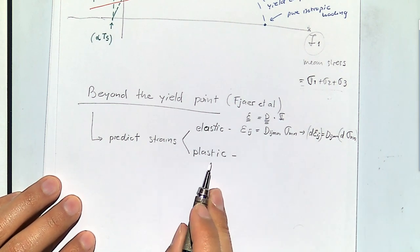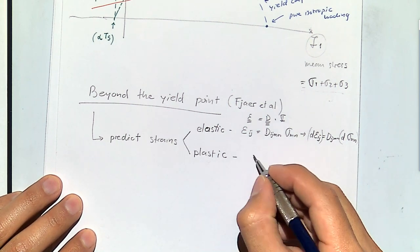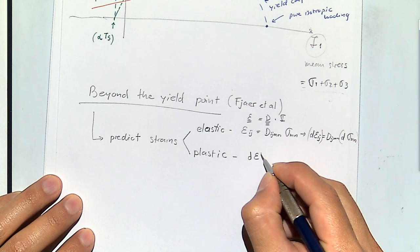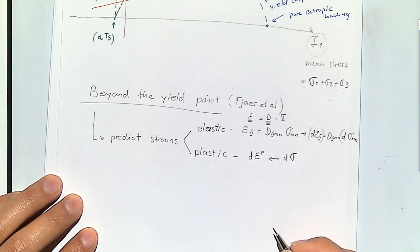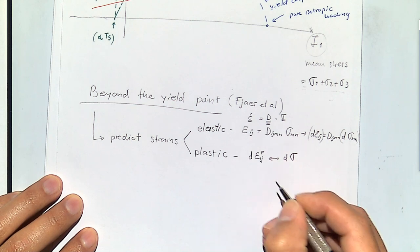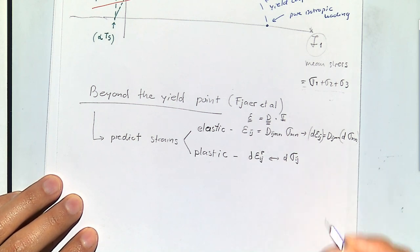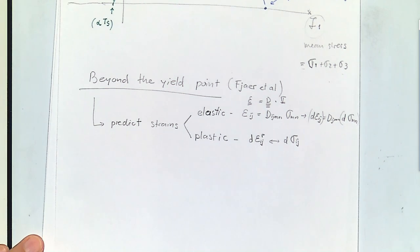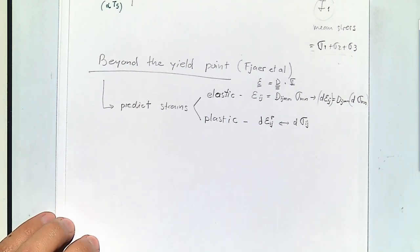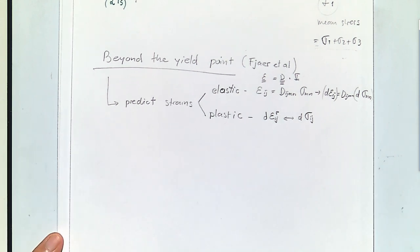Now our objective is to predict the plastic strains — we want to know what is going to be the change of plastic strain due to a change in stress. We'll see that this is not as easy as for elasticity; it's actually a lot more complicated. But the concept is not that complicated, and for many real problems elasticity is very limited and we need to start using plasticity.